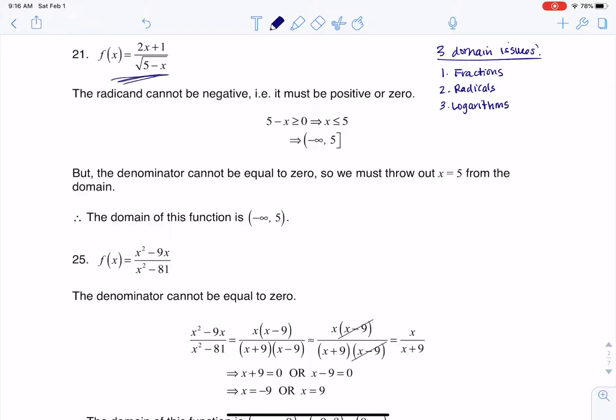If we look at the function given to us here, we do have a fraction, so we're going to have to worry about that, and we do have a radical with an even index. When I say even index, that index is two, so we've got to worry about where this radicand is greater than or equal to zero.